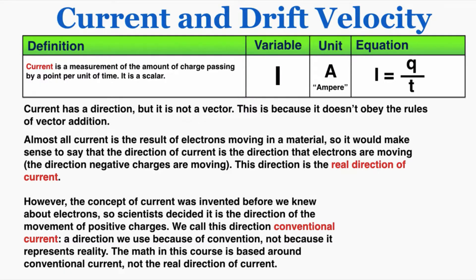However, there's something weird about how we talk about current, which is that the concept of current and all our physics around it was invented before we knew about electrons, before we specifically knew what electrons were and how they worked. So scientists at the time decided that current is the direction of the movement of positive charges. So even though positive charges are not actually moving in a circuit or in most other situations, we can say that because the negative charges are moving away from that area, it's kind of like the positive charge is moving toward that area. So that opposite direction of the negative charge, the positive charge...